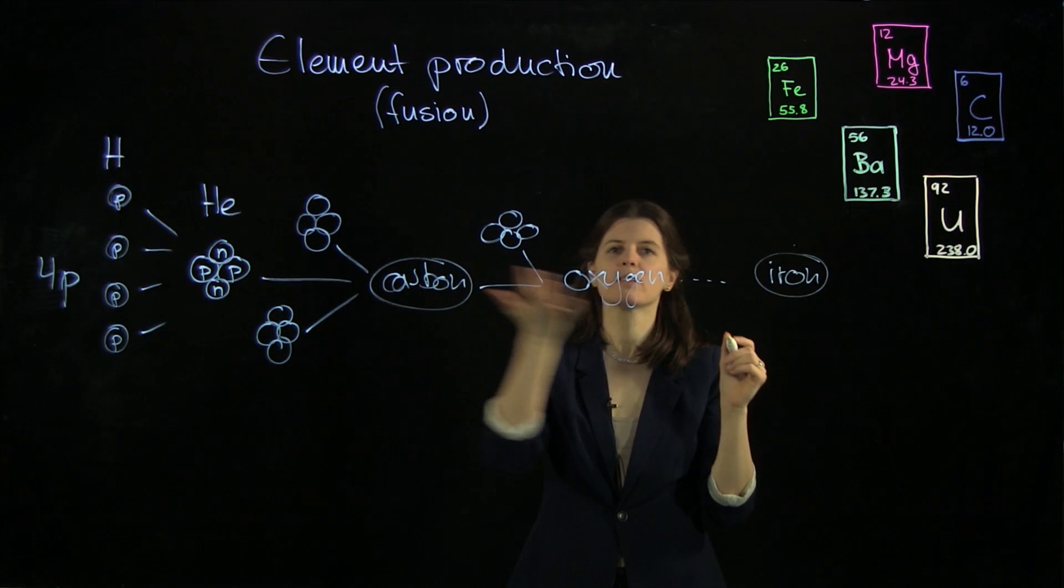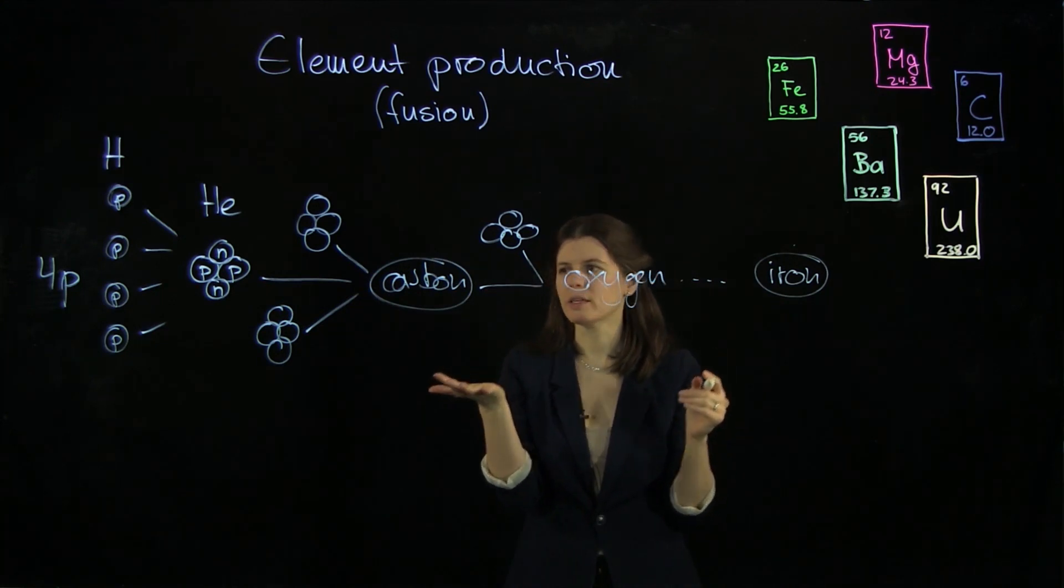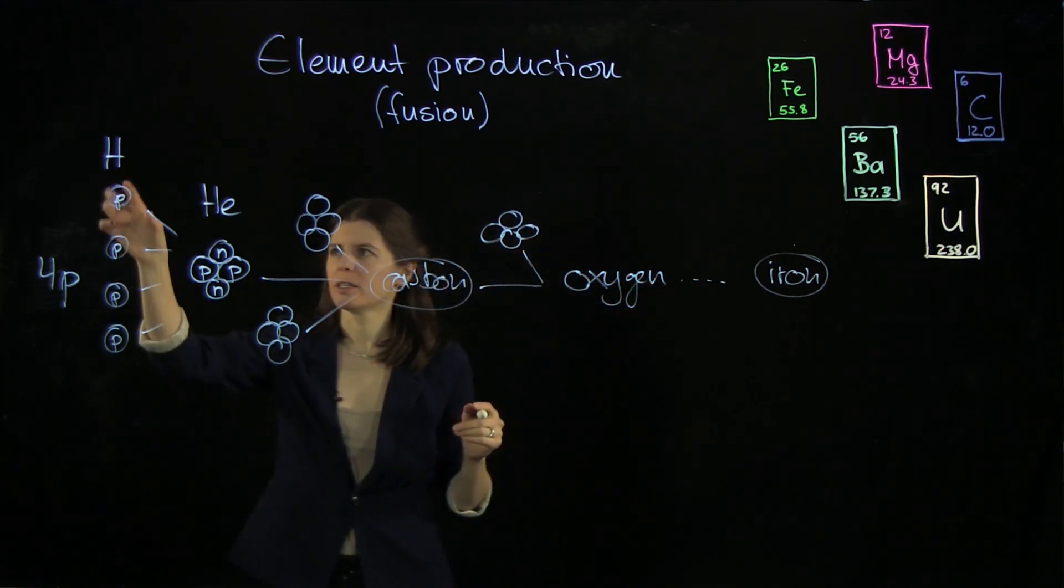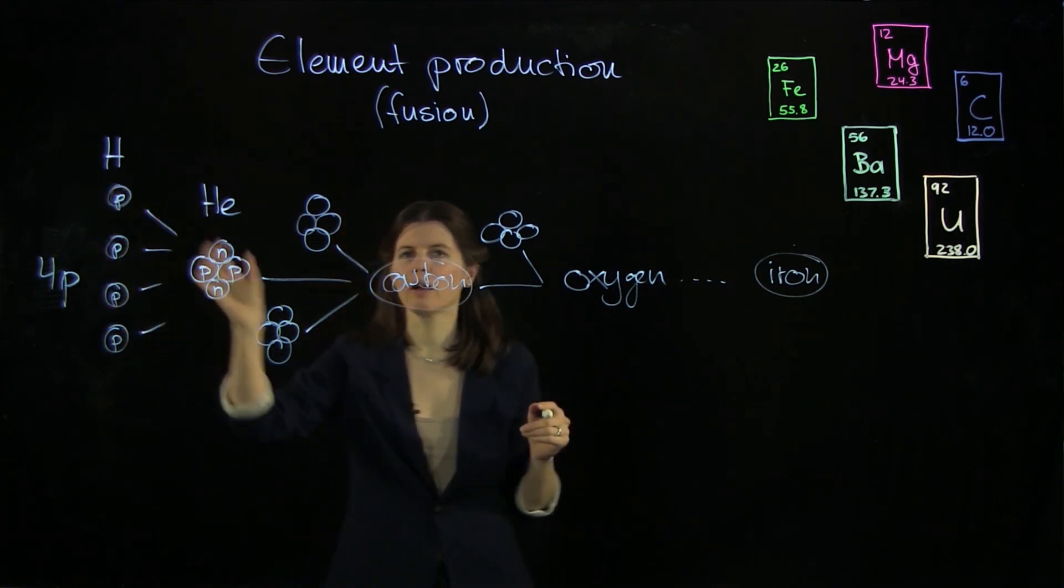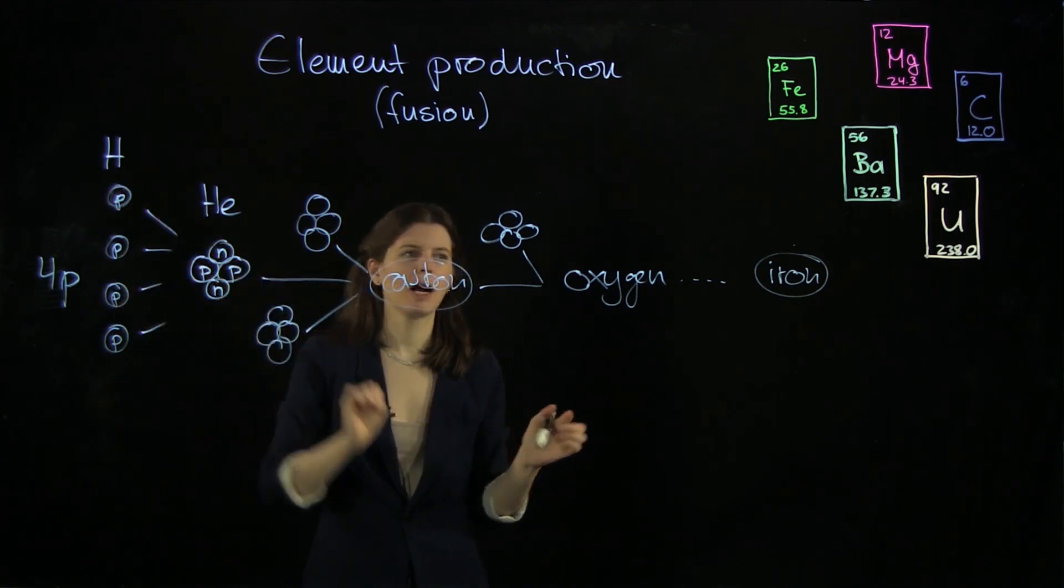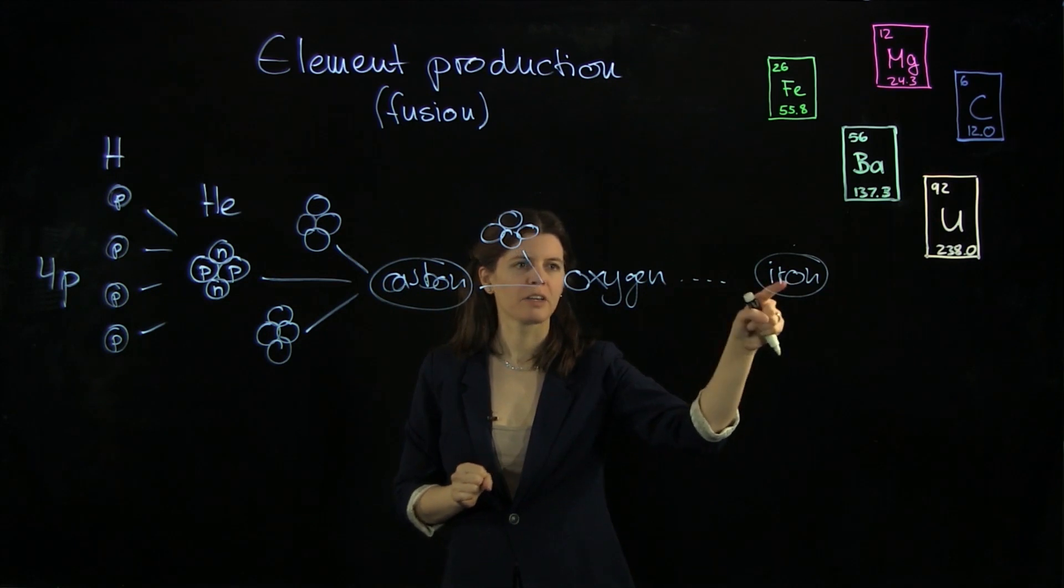Now, how does this help us understanding why the sun shines? As it turns out, these lightest nuclei here, they are less tightly bound than the big ones like iron.